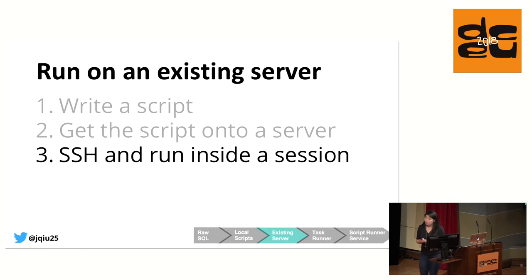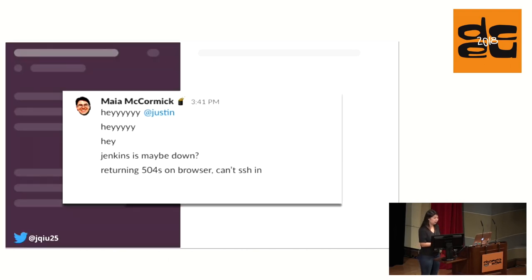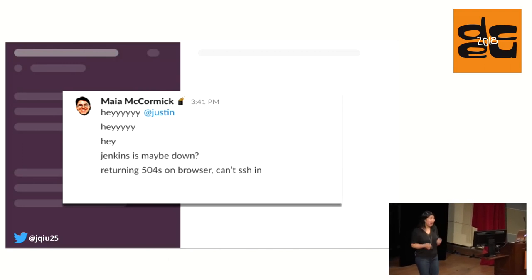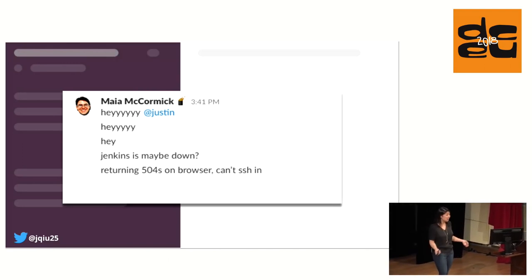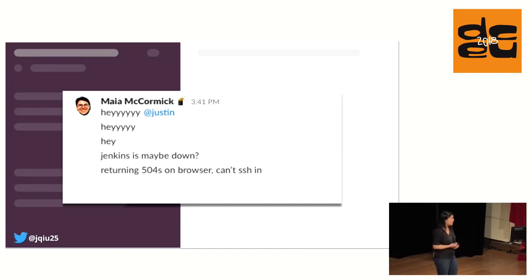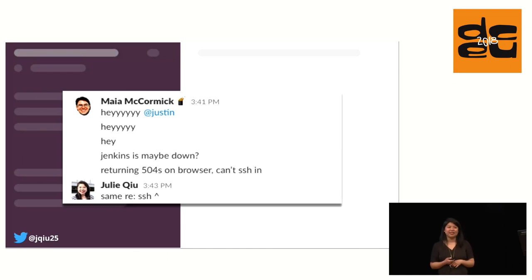This method of running scripts on Jenkins had worked really well for me — until one day I happened to notice this message show up in our engineering Slack channel. Our on-call engineer Maya noticed that Jenkins was down and pinged our DevOps lead Justin to let him know. And I, being a responsible engineer, also confirmed that yes, Jenkins was down. Then I went back to doing my work.